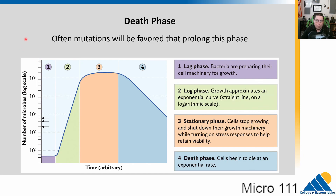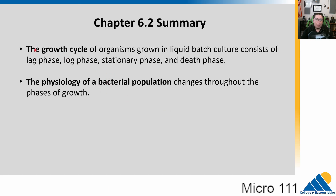Those are the four phases. Lag phase: sensing and preparing to grow. Log phase: maximum growth rate. Stationary phase: sensing that something's not right — no new nutrients, too many cells. Death phase: cells start to die. Growth cycles are generally recorded in a liquid batch culture under ideal conditions, and the bacterial population changes what it's doing depending on each phase of growth. That's it for 6.2.